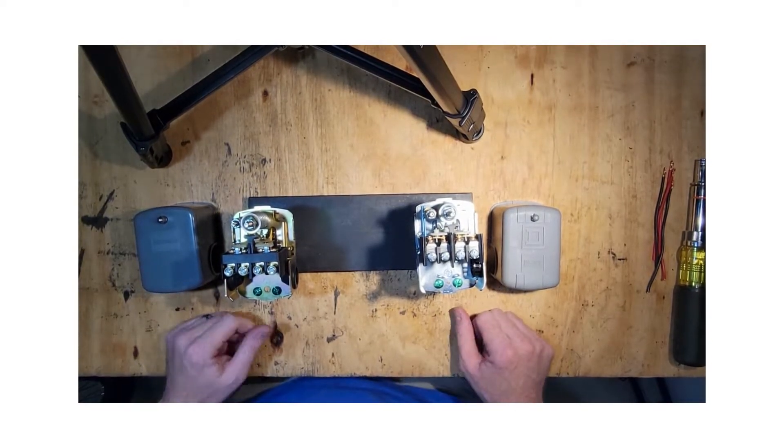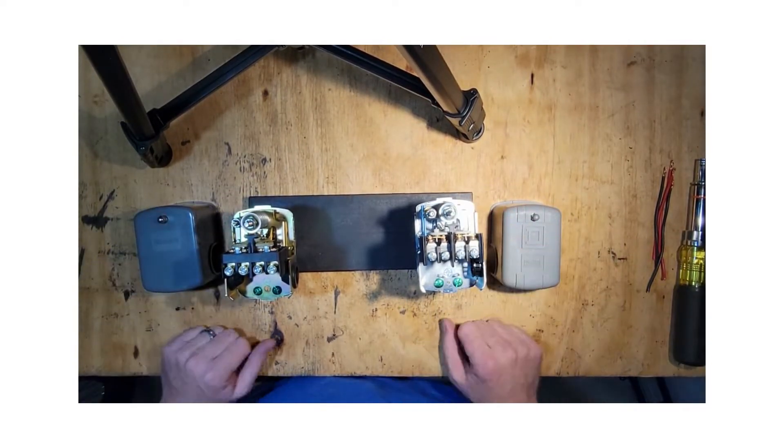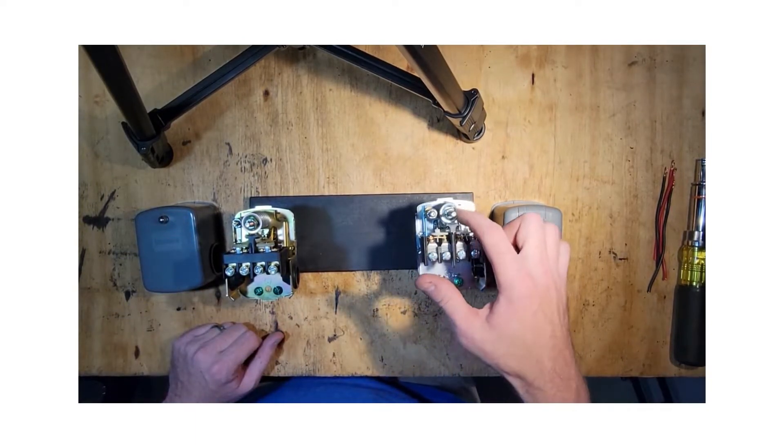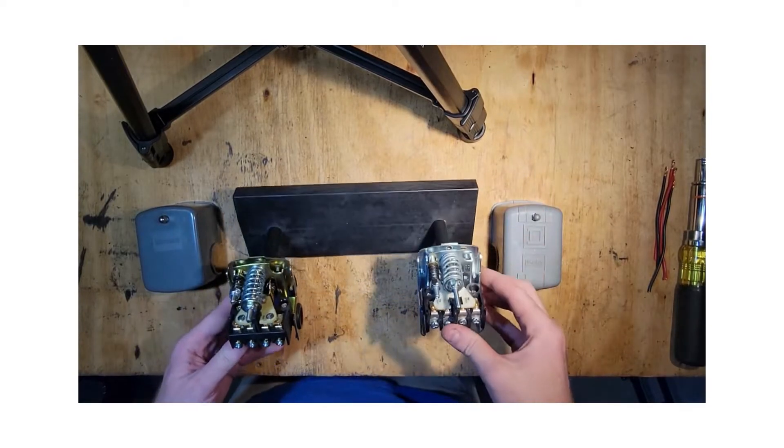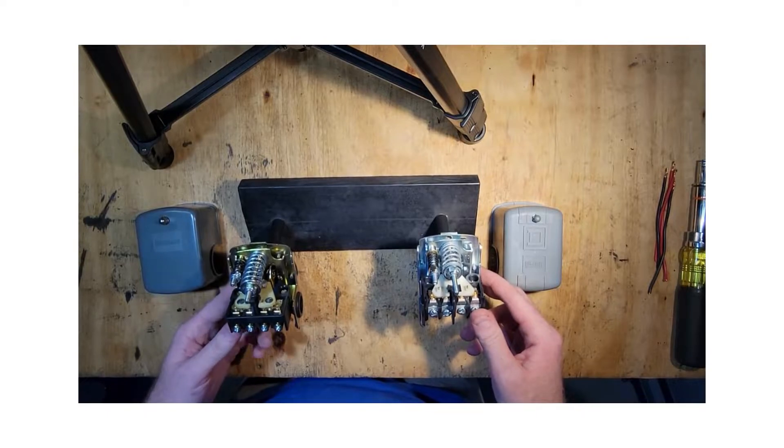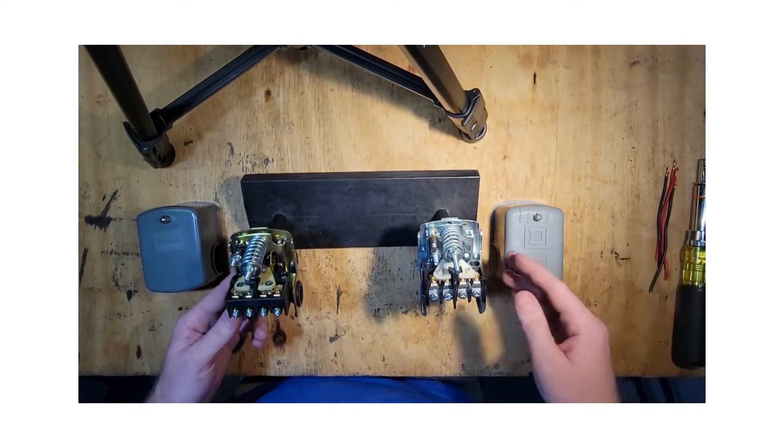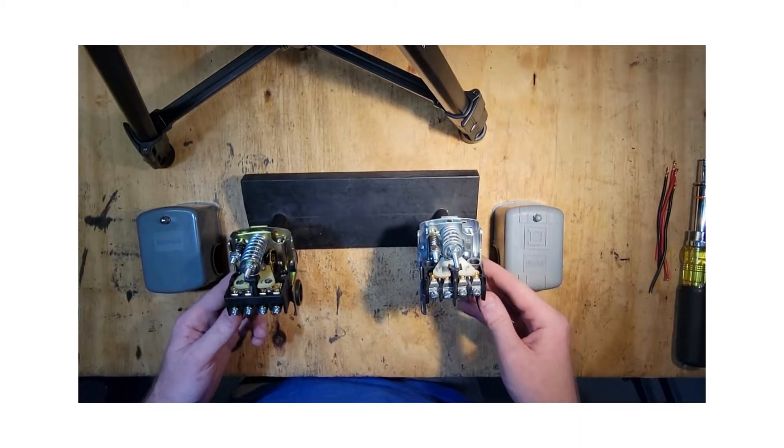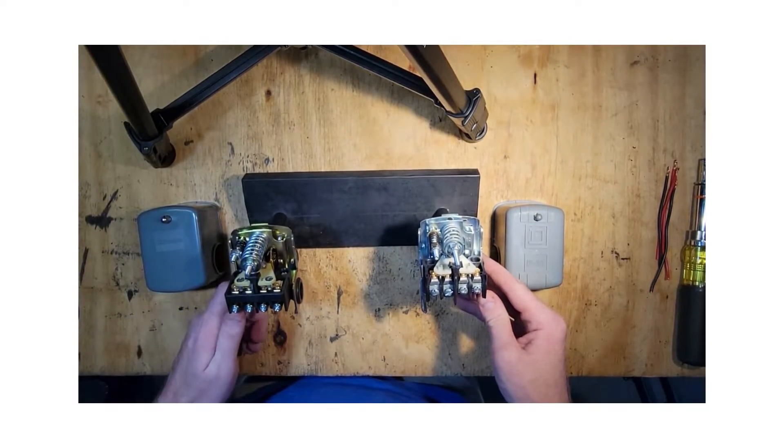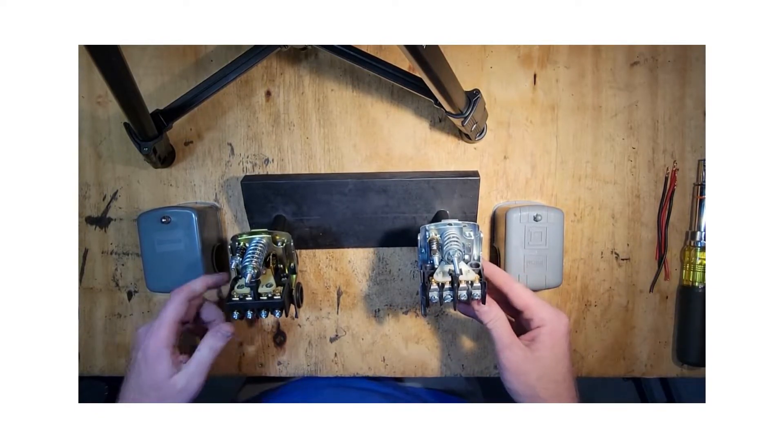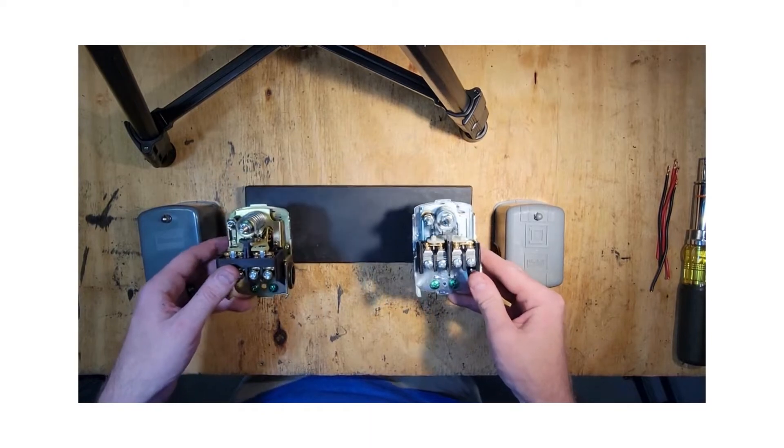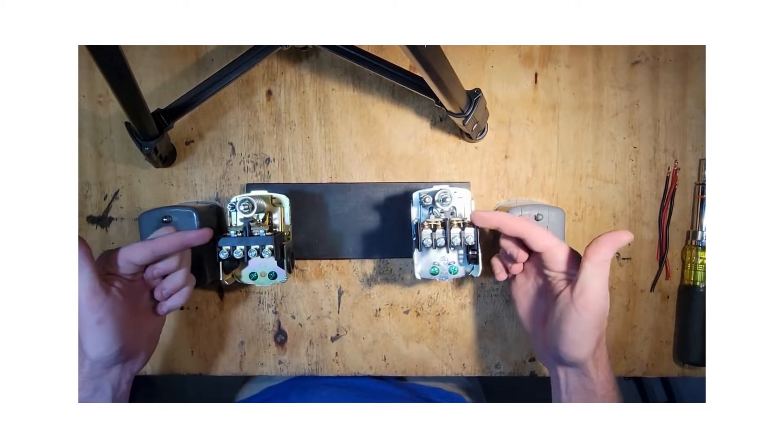They both have the same adjustment mechanisms. With the larger spring here, you adjust the on and off pressure equally—tightening it raises it, loosening it decreases it. The smaller spring, if you tighten it, increases the cut-off pressure only, and if you loosen it, decreases the cut-off pressure only.